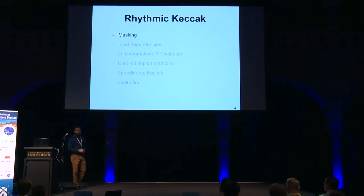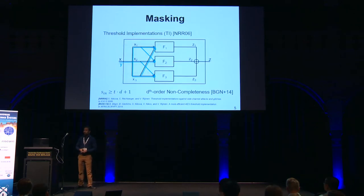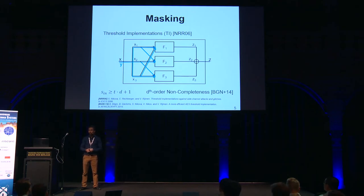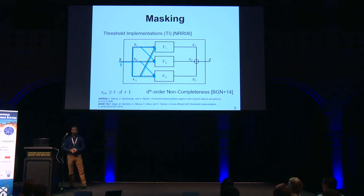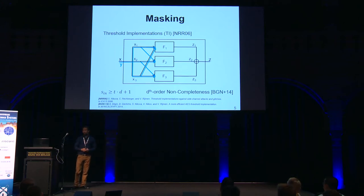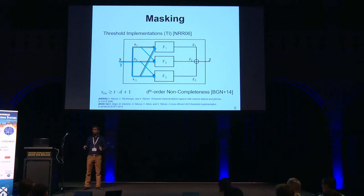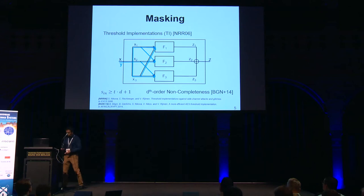Let me start by introducing two masking schemes used in our work. Threshold Implementations, or TI, are already well known. This is an example of an AND gate — a first-order secure AND gate. The inputs in TI depend on the algebraic degree of the function and the desired degree of security. A key property of TI is non-completeness: every t-combination of output shares must be independent of at least one input share. In this example, every output depends on only two input shares.